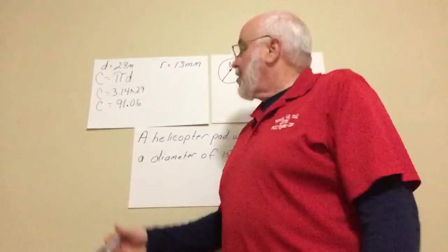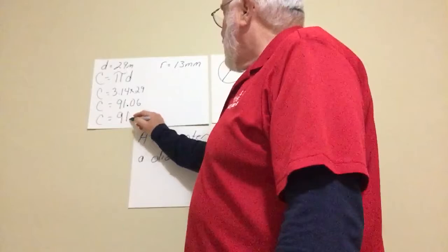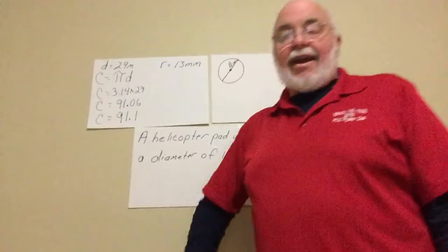And I think a lot of times they ask us to round to the nearest tenth. So we've got to look. 6 is greater than 5. So circumference, 91.1.